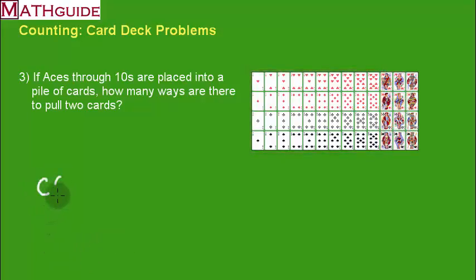So what we're going to do is plop this in the combination formula because order does not matter. We're going to take those 40 cards and we're going to choose 2 of them. So we plug this into the calculator. The calculator says 780 ways.